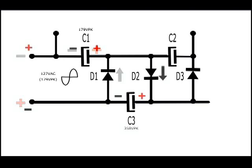When the AC reverses polarity, the diode D2 charges the capacitor C3 to the line peak voltage, adding to the charge of C1, thus charging C3 twice the line peak voltage, in this case 358 volts.